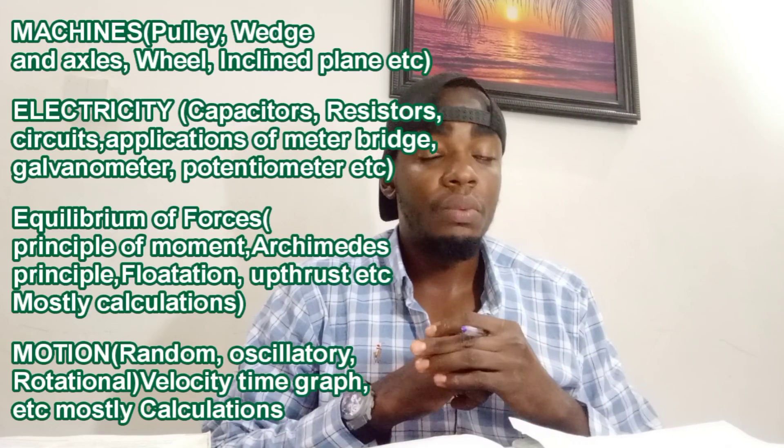The sixth most repeated topic is motion. We have different types of motion: random motion, particular motion, oscillatory motion, and translational motion — know them all. Know your velocity-time graph — it is very important — and know how to do certain calculations. There are many formulas in this topic, which is why I compiled the physics formula book. Join the WhatsApp channel to get your own physics formula book.